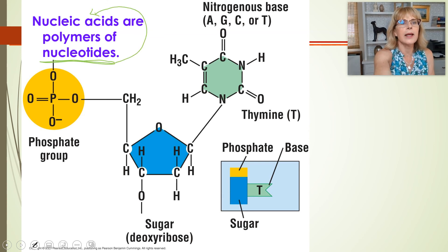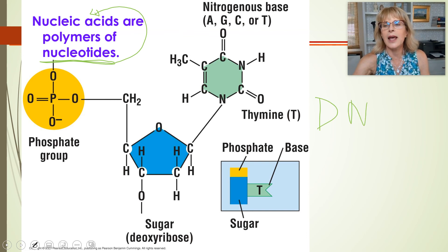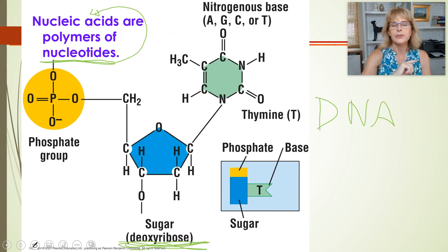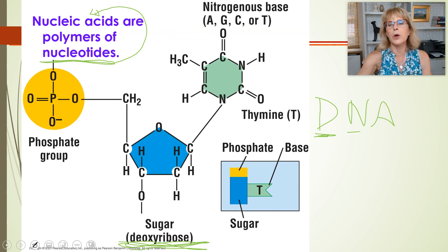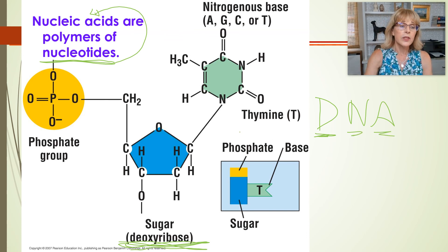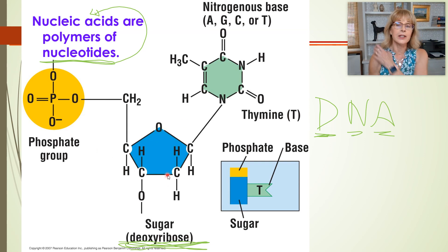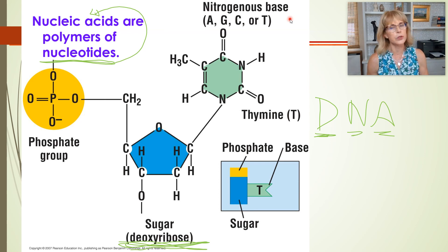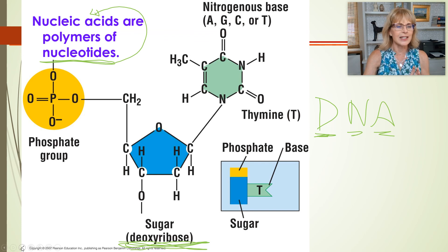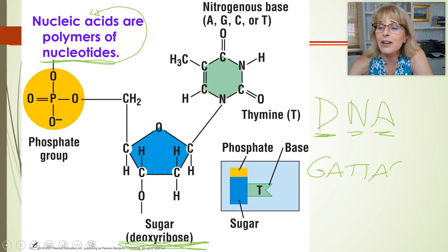Here is a DNA nucleotide — we know it's a DNA nucleotide because the 'D' in DNA stands for deoxyribose. DNA nucleotides have the sugar deoxyribose, which is where the name 'deoxyribonucleic acid' comes from. Each nucleotide has a phosphate group, a deoxyribose sugar, and a nitrogenous base. For DNA there are four bases: G, A, T, and C.